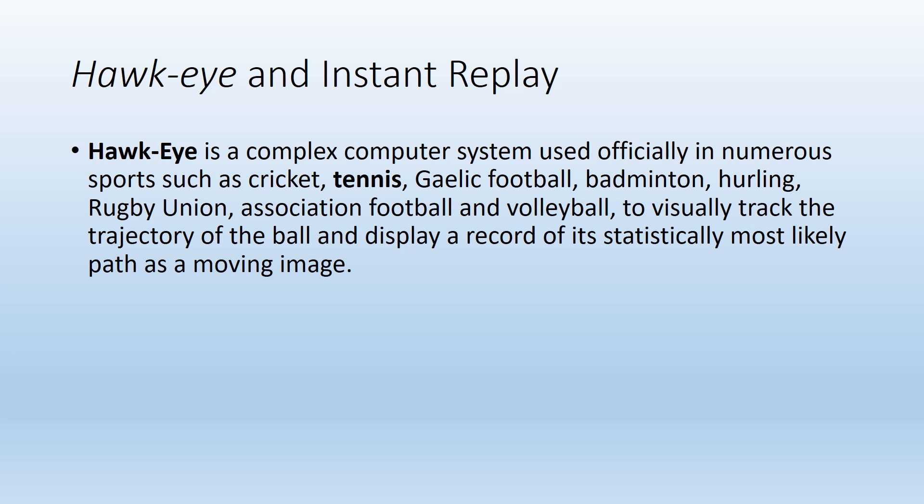In a moment, we'll look at two videos that show how Hawkeye works. It's a really complicated computer system that uses a number of cameras positioned around the sports stadium. Whether it's cricket, tennis, Gaelic football, badminton, hurling, rugby union, association football, or volleyball, it tracks the trajectory of a ball and records where it's most likely to move to next. If you've ever watched tennis, they show the instant replay almost instantaneously because the computers are constantly calculating where every ball is most likely to land based on its speed and trajectory.